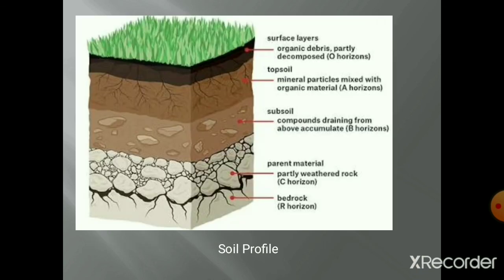A typical soil profile consists of different soil horizons. In this picture we can see the soil profile. The surface layer is made of organic debris and a partly decomposed layer. Then the top soil is made of mineral particles mixed with organic material - this is the A horizon.